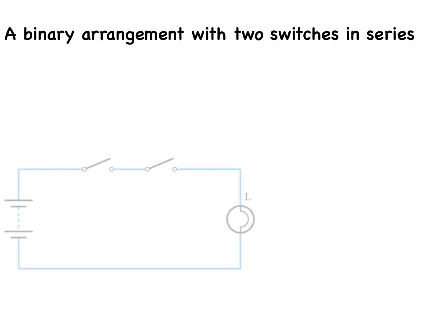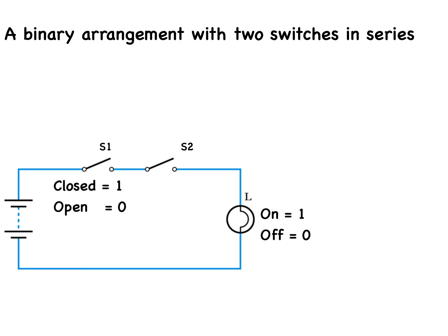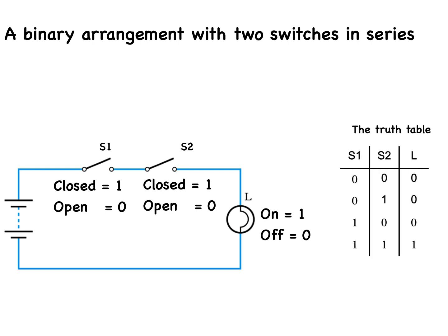This is a binary arrangement that has two switches in series with a power source and a light. Either switch can be open or closed; the light will be either off or on. As before, we assign binary numbers: for the light, on equals 1, off equals 0; for the switches, closed equals 1, open equals 0. In order to analyze these binary arrangements we devise a truth table. The two switches form what is known in logic gate terms as an AND gate. We state its logic in the equation: L equals S1 AND S2.